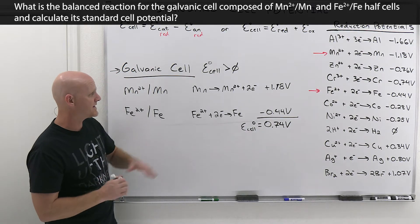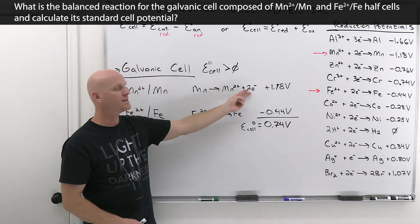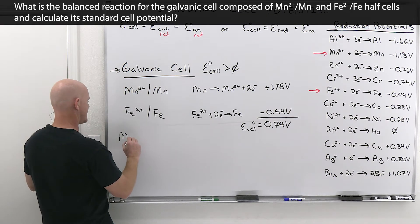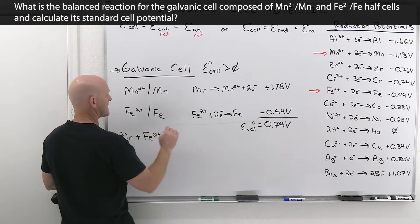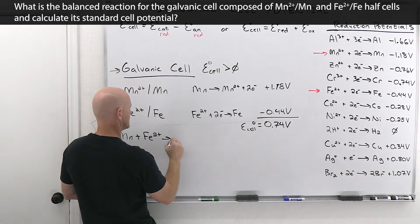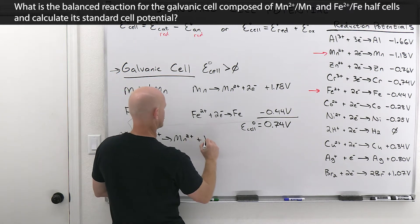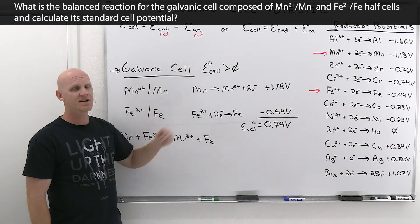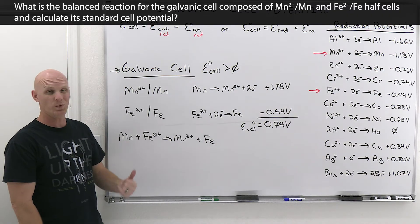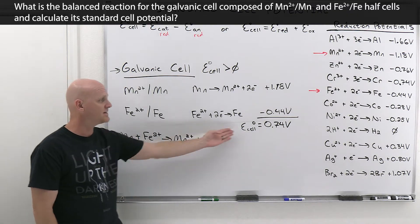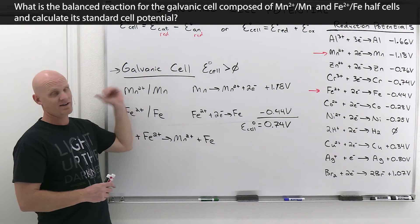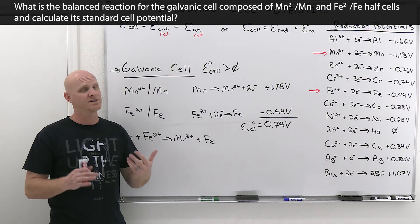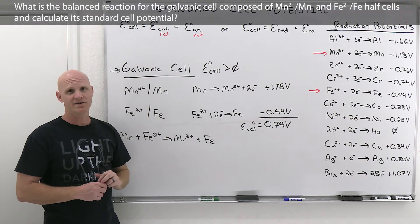Now we write the balanced reaction. Both are two-electron half reactions, so the electrons cancel directly: Mn + Fe²⁺ → Mn²⁺ + Fe. The E_cell is +0.74 volts, confirming it's a galvanic cell. Had you written this exactly backwards, E_cell would have been −0.74 volts — not spontaneous and not a galvanic cell.